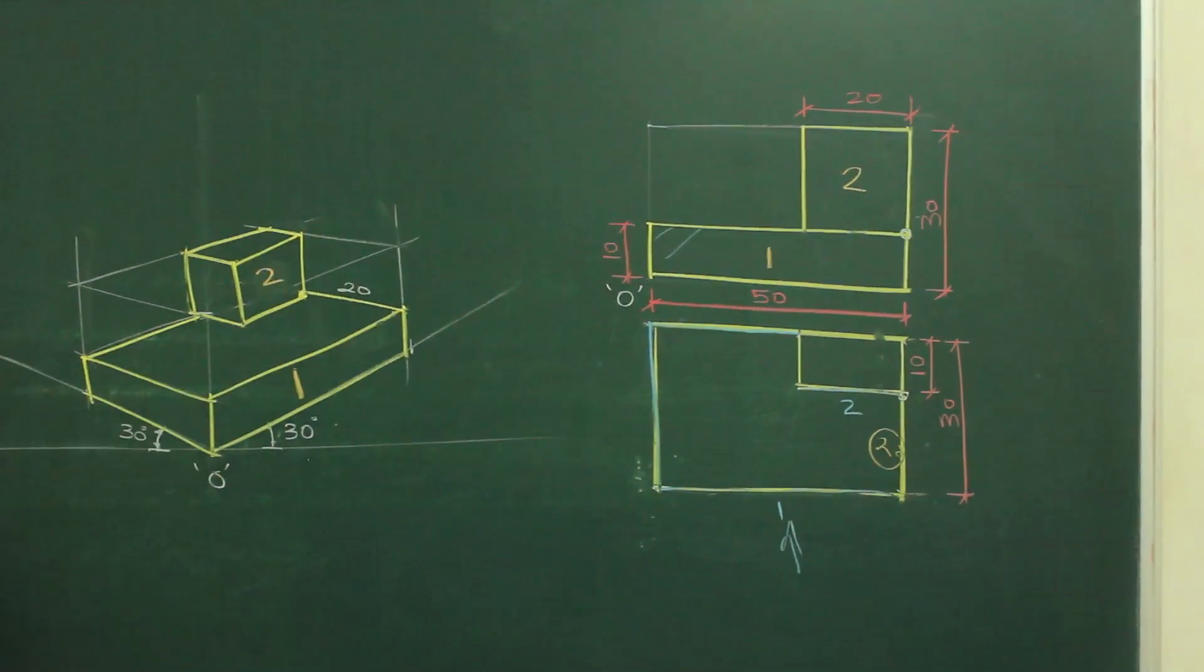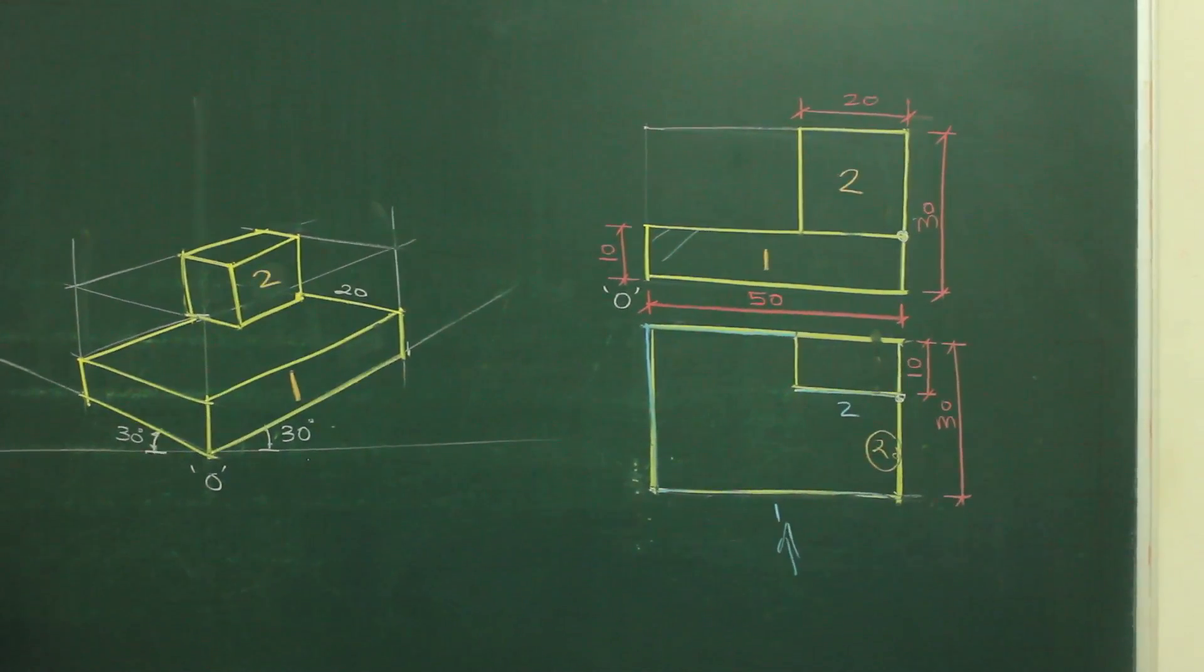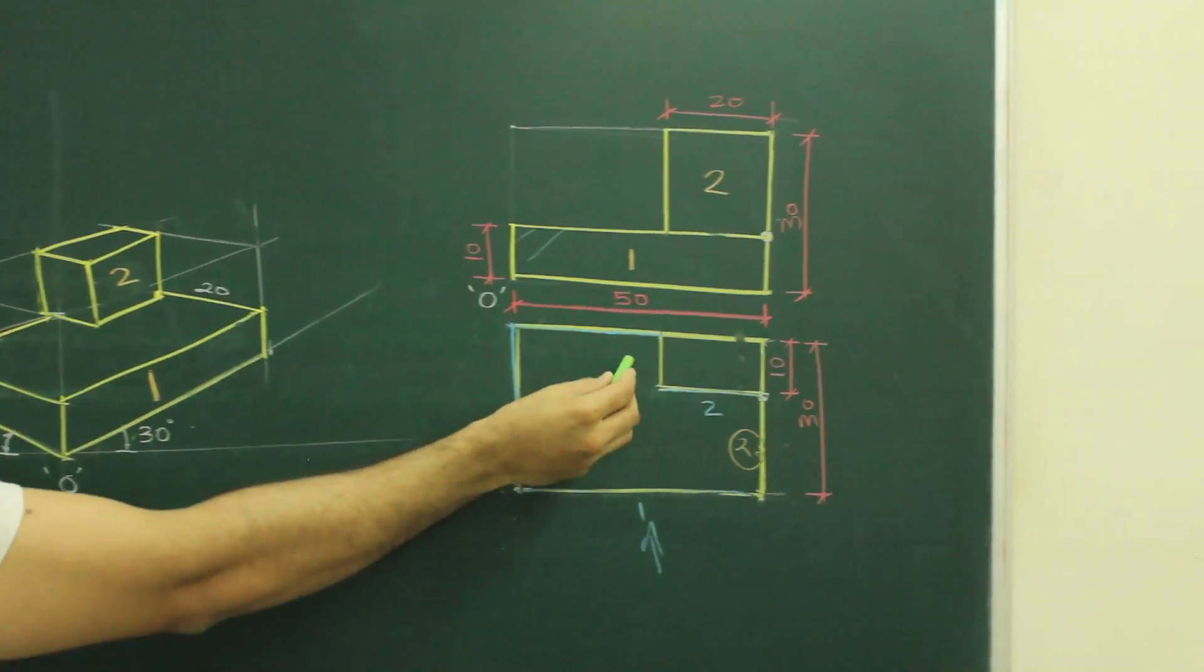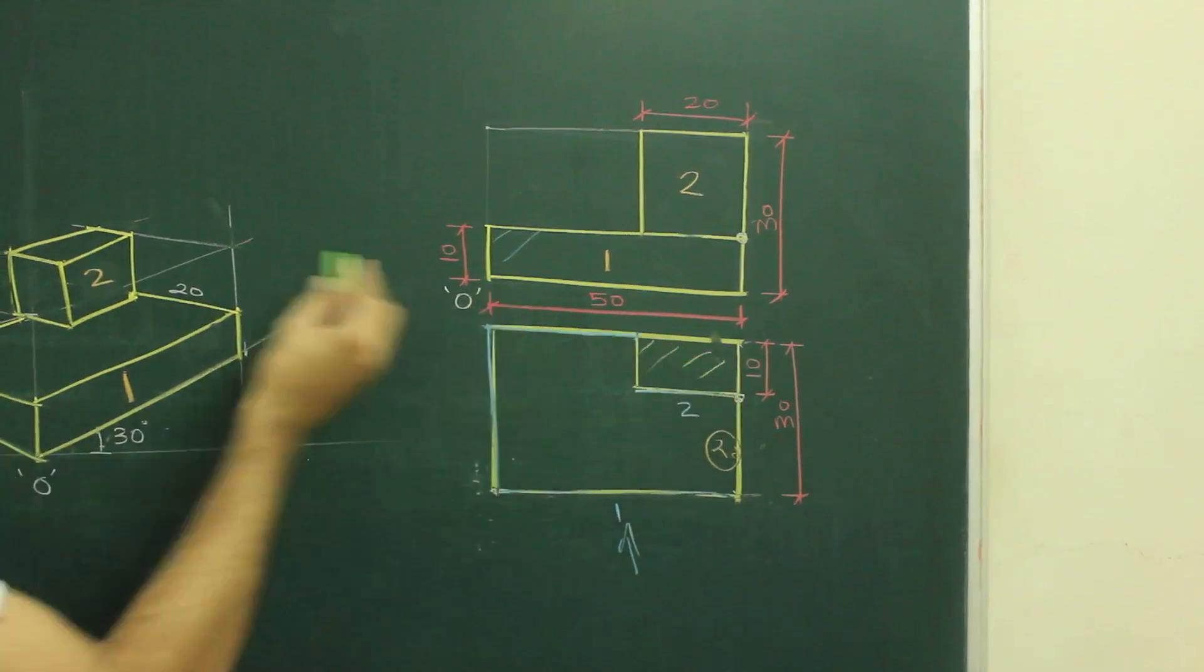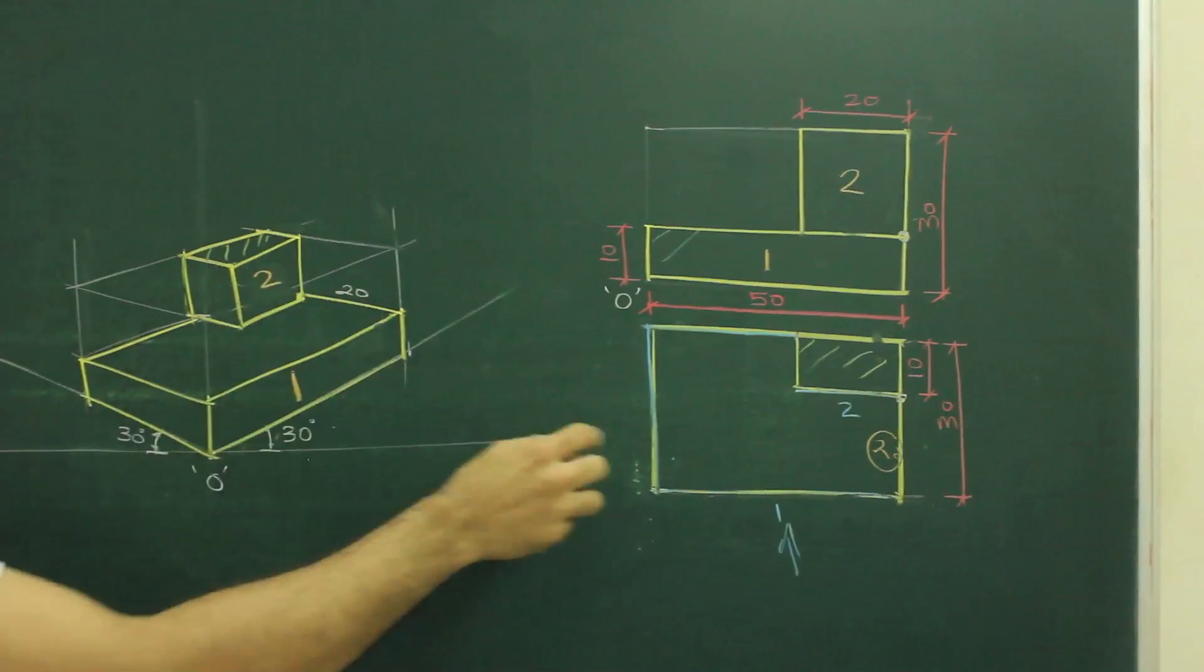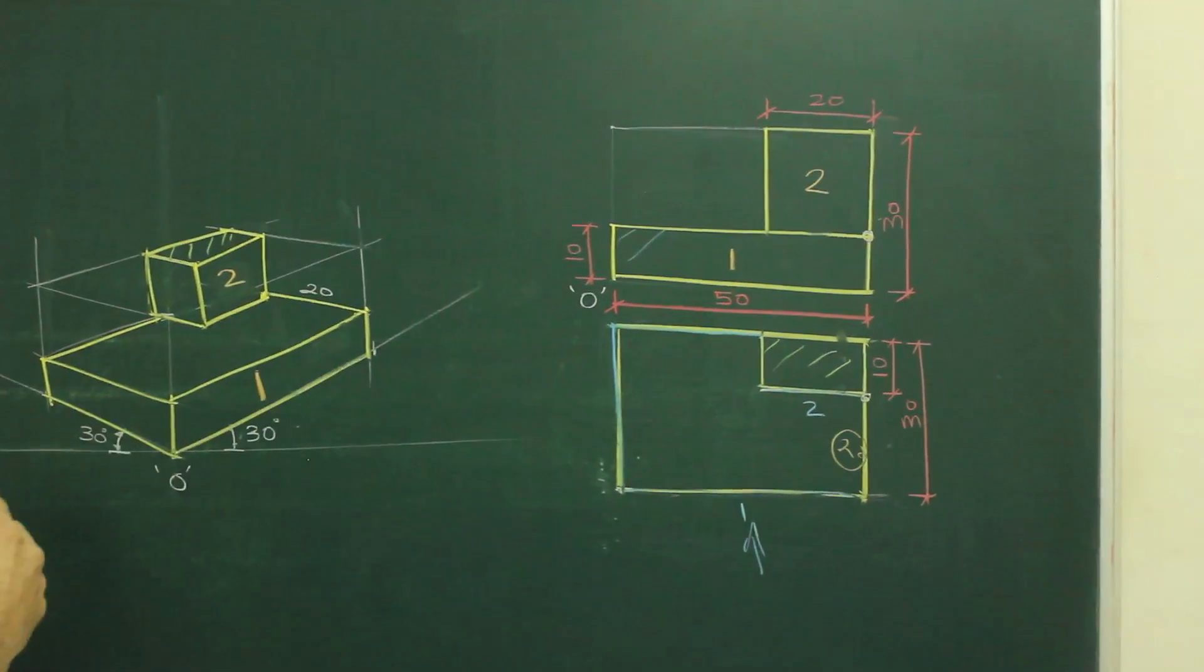And then we have drawn part 2. And afterwards, this part, the main diagram, is this part. So this and this, again there are two different levels.